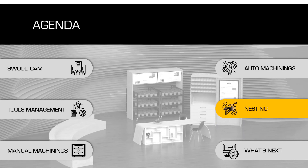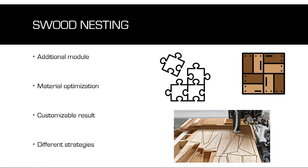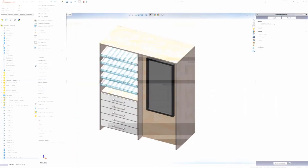Let's now move on to the fifth part: a short introduction on SWOOD Nesting. SWOOD Nesting is an additional module of SWOOD CAM that allows you to create nesting projects out of your SWOOD models. It allows you to optimize material — you can mix different projects with the same material to fill a nesting sheet, use fillers on those nesting sheets, and so on. The nesting results are generated automatically, but you also have the possibility to customize results manually — for example, if you have damage on a corner, you can move the part on the nesting sheet. Finally, you can use different strategies that impact your nesting results.